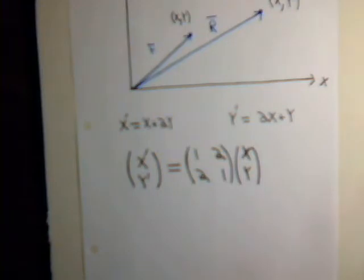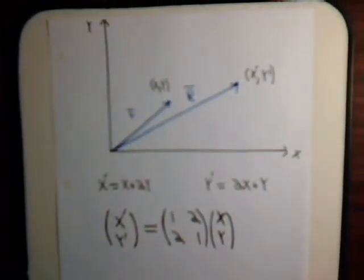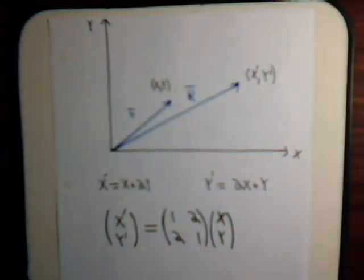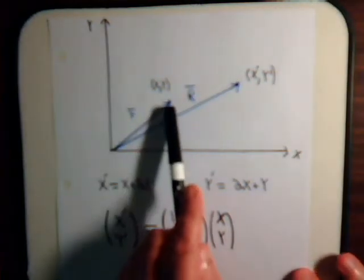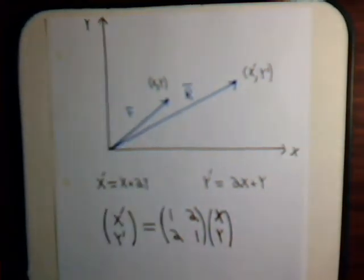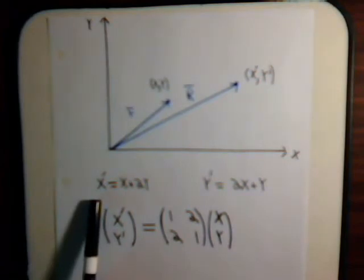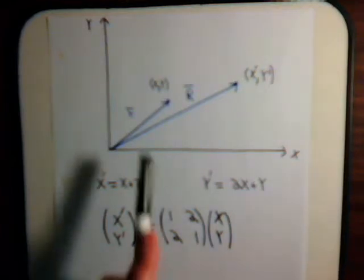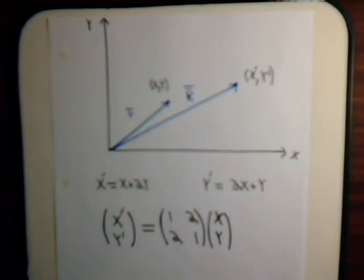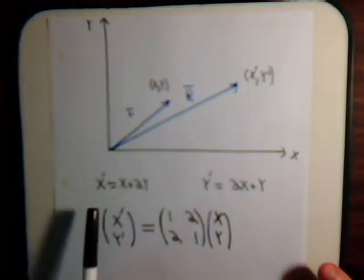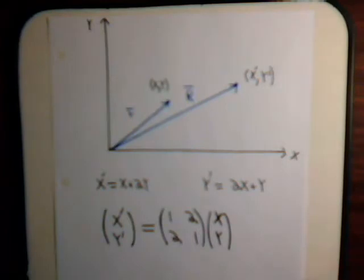Let's say we have a simple setup. We have a vector r, and for every x, y point on r we're going to keep x the same value but add 2y to it — x plus 2y — and that will be x prime for a different line. The y point for our different line will be 2x plus y. So for every x, y point on r we can find a corresponding x prime, y prime on a different line.